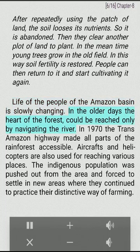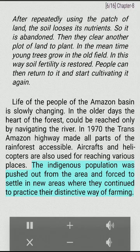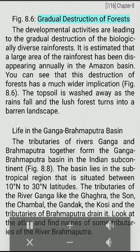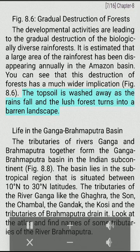Life of the people of the Amazon basin is slowly changing. In the older days the heart of the forest could be reached only by navigating the river. In 1970 the trans-Amazon highway made all parts of the rainforest accessible. Aircrafts and helicopters are also used for reaching various places. The indigenous population was pushed out from the area and forced to settle in new areas where they continued to practice their distinctive way of farming. The developmental activities are leading to the gradual destruction of the biologically diverse rainforests. It is estimated that a large area of the rainforest has been disappearing annually in the Amazon basin. The top soil is washed away as the rains fall and the lush forest turns into a barren landscape.